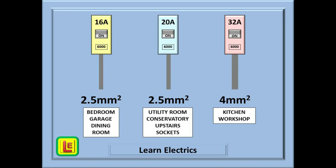For a bedroom, a 16 amp breaker may be sufficient when you consider the small demand — perhaps a computer, a TV, and one or two bedside lights. If the house has central heating then there is no need for a heater in the bedroom. With a 16 amp breaker the cable size should be 2.5 millimetres. This would apply also to a garage or perhaps a separate dining room. A utility room may have a washing machine and a tumble dryer; consider increasing the breaker size to 20 amps — the cable size can remain at 2.5 millimetres.